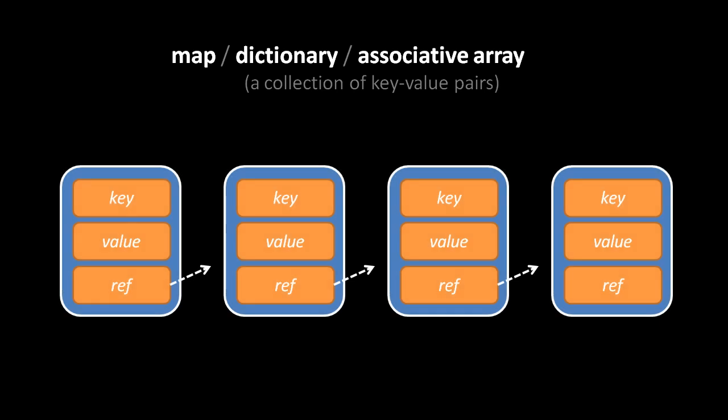Perhaps the simplest way of implementing a map closely resembles a linked list, but rather than in each node storing just a single value, we store both a key and a value. The obvious downside of this implementation is the performance costs of the basic operations. If we want to insert a key-value pair, first we have to look through the whole list to see if there's a node already with that key, because keys are supposed to be unique, so we can't just add a new key-value pair without checking first.